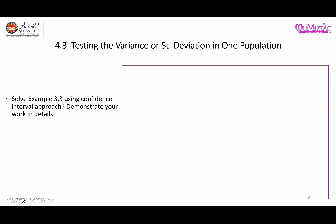Now we will solve the same example using the confidence interval approach. Step one is again writing down the null and alternative hypotheses — the same as in the traditional approach. Step two is to obtain the confidence interval. We use the confidence interval formula for the population variance involving chi-squared sub alpha over 2 and chi-squared sub 1 minus alpha over 2.